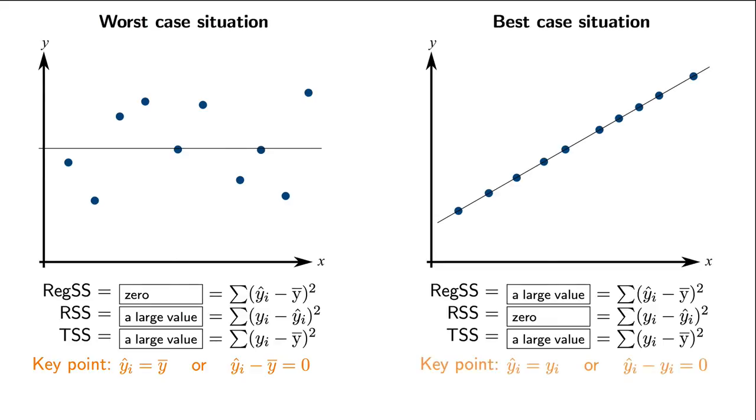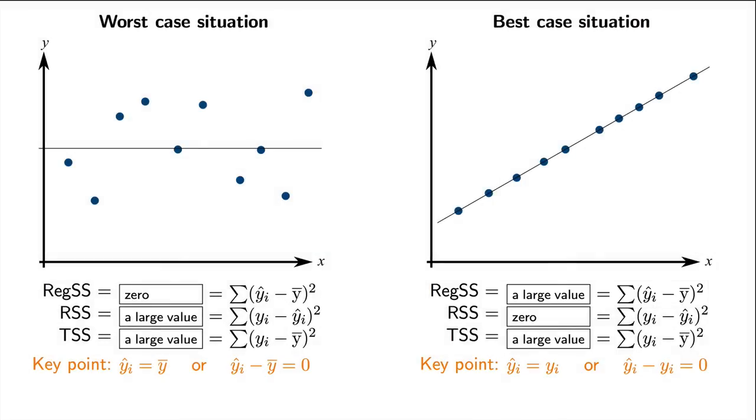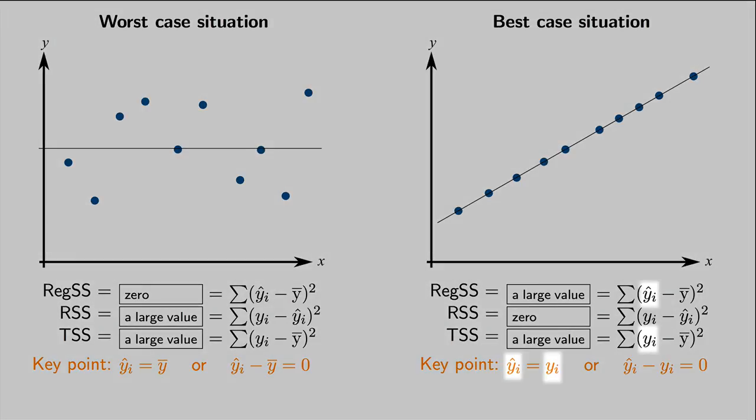In the best-case situation, we have that the prediction, y-hat, is exactly the same as the measured value, yi. So this term, regression sum of squares, will be a large positive value. It will also be the same large positive value for the total sum of squares, TSS, because yi is equal to y-hat i.